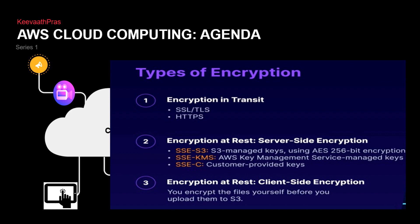We have HTTP which is a normal protocol, and HTTPS which is a secure protocol. HTTPS is more expensive because it is more secure — this is encryption in transit. For encryption at rest there are three kinds: SSE-S3, which is S3 managed keys using 256-bit encryption; SSE-KMS, which is Key Management Services using a managed key; and SSE-C, which is a customer-provided key. There is also client-side encryption where you encrypt the files yourself before uploading them to S3.